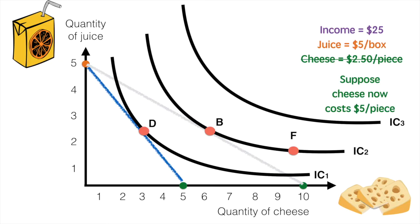after the price of cheese increases, our budget line shifts inwards and the new point of preference is D. It represents a lower amount of total goods due to the rise in price of cheese.